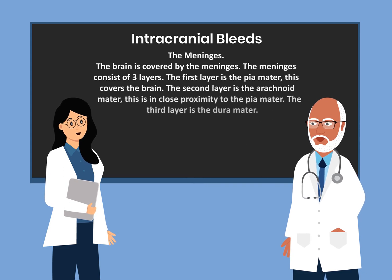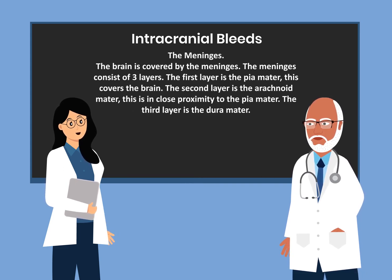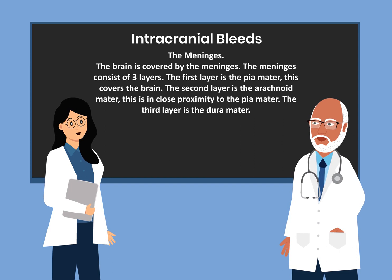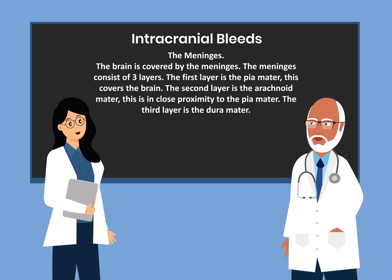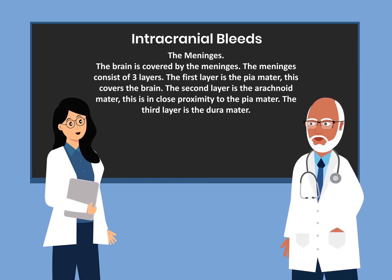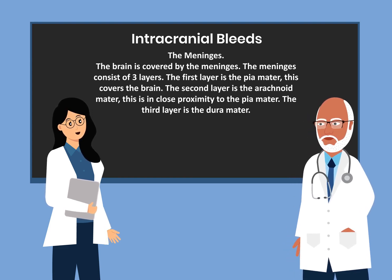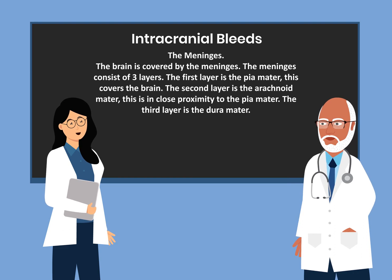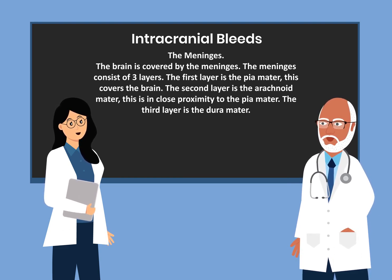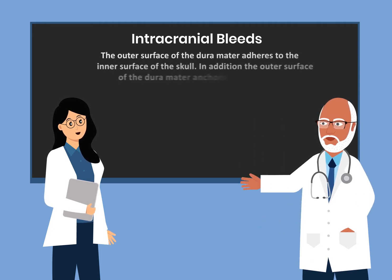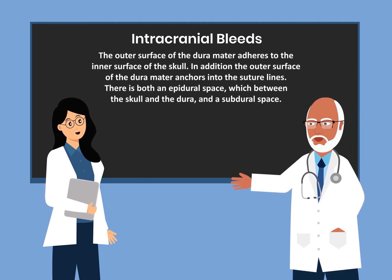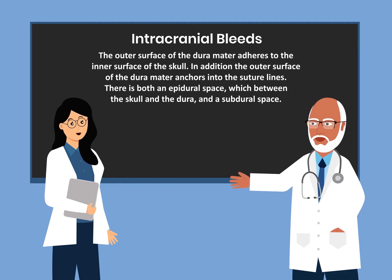Let's talk about the meninges, the covering of the brain. The meninges consist of three layers. The first layer is the pia mater, which covers the brain. The second layer is the arachnoid mater, which is in close proximity to the pia mater. The third layer is the dura mater. The outer surface of the dura mater adheres to the inner surface of the skull.